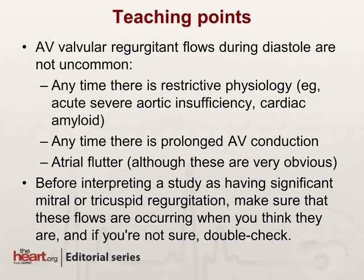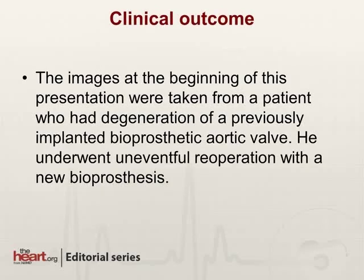Anytime there is restrictive physiology — such as cardiac amyloidosis, severe aortic insufficiency, or in theory severe pulmonic insufficiency if it were acute — this can happen. Anytime there is prolonged AV conduction, and in atrial flutter as well. The teaching point: before interpreting any study as having significant MR or TR, make sure that the flows are occurring when you think they are, and if you are not sure, take a careful look.